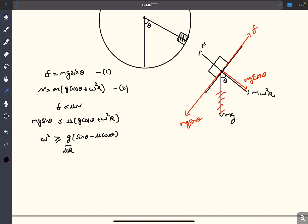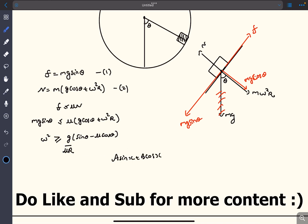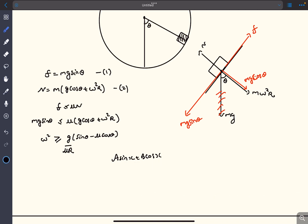Basically we have to find the maximum of this expression. Any expression of the form a sin x plus b cos x has a maximum value of square root of a squared plus b squared.